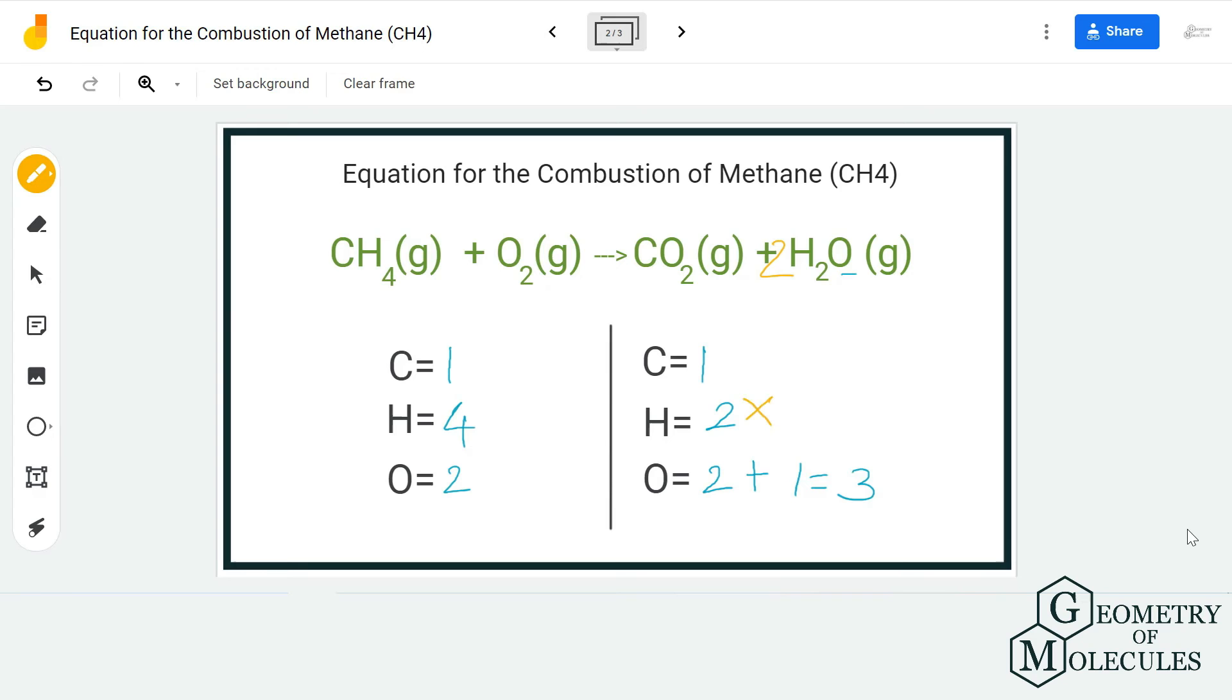Now we can update the oxygen atoms as well. We will have two plus two equals four oxygen atoms on the product side. However, there are only two on the reactant side, so I am going to add coefficient 2 before O2.